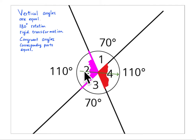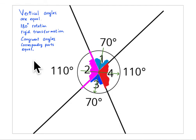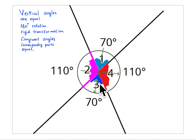Furthermore, if you go across the intersection to the other side, those angles are going to be congruent — they are vertical angles, they're equal. A 180-degree rotation will take this angle over to here, proving that they are congruent angles. These are also vertical angles; corresponding parts are equal. If you do the same thing on the other side with 70 degrees, rotating 180 degrees around, it's going to land right here and be equal to this angle.